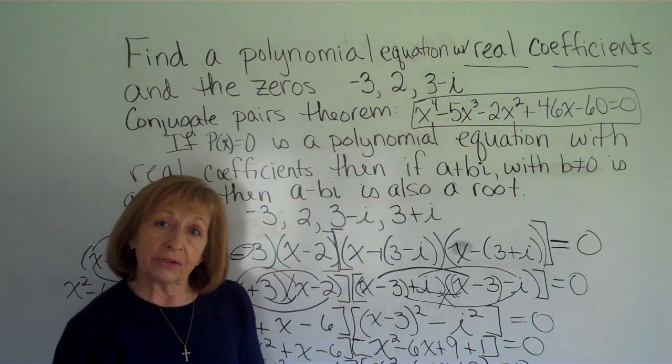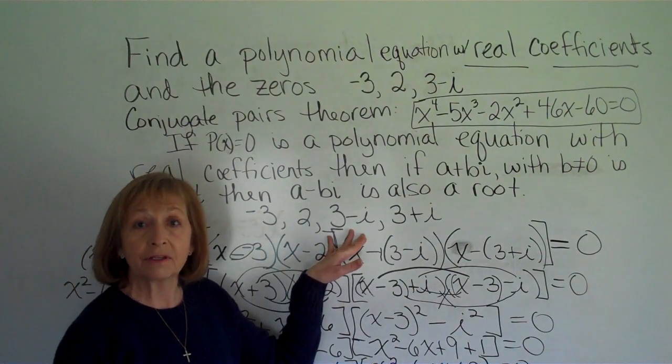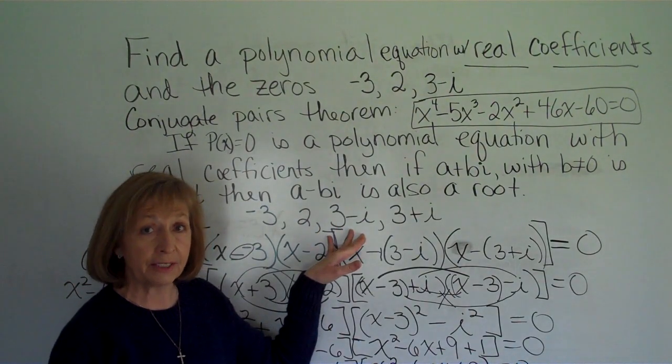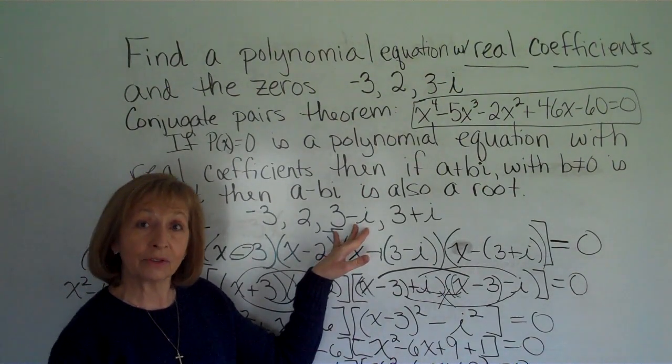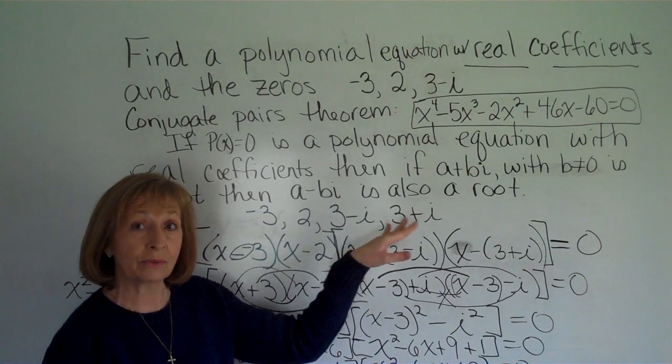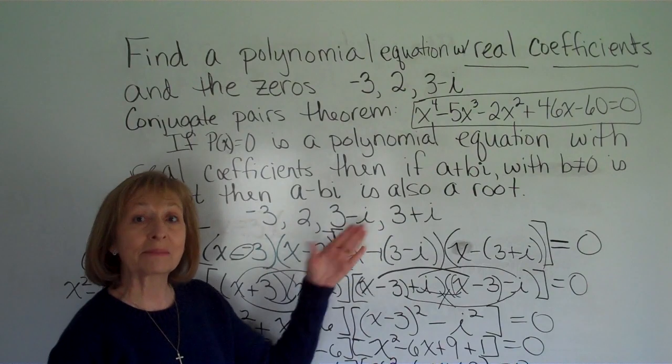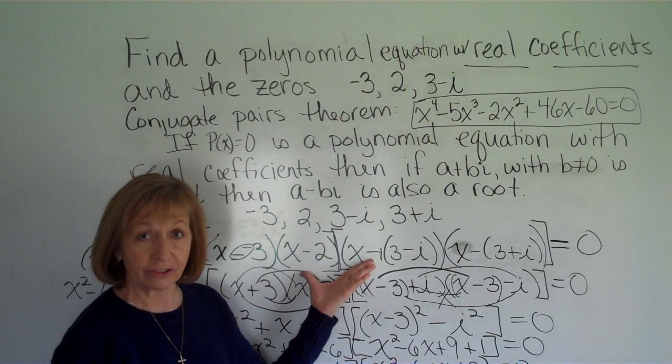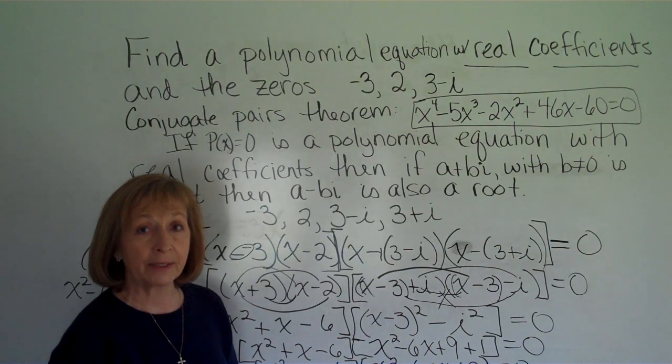So another thing that I want to bring your attention to is we were given a partial set of the roots of the polynomial equation with real coefficients. And because there was a non-real complex number in the set, we also needed to have its complex conjugate. From there, since those are the roots, x minus those numbers are factors. And then we multiplied them all out to get our polynomial equation.